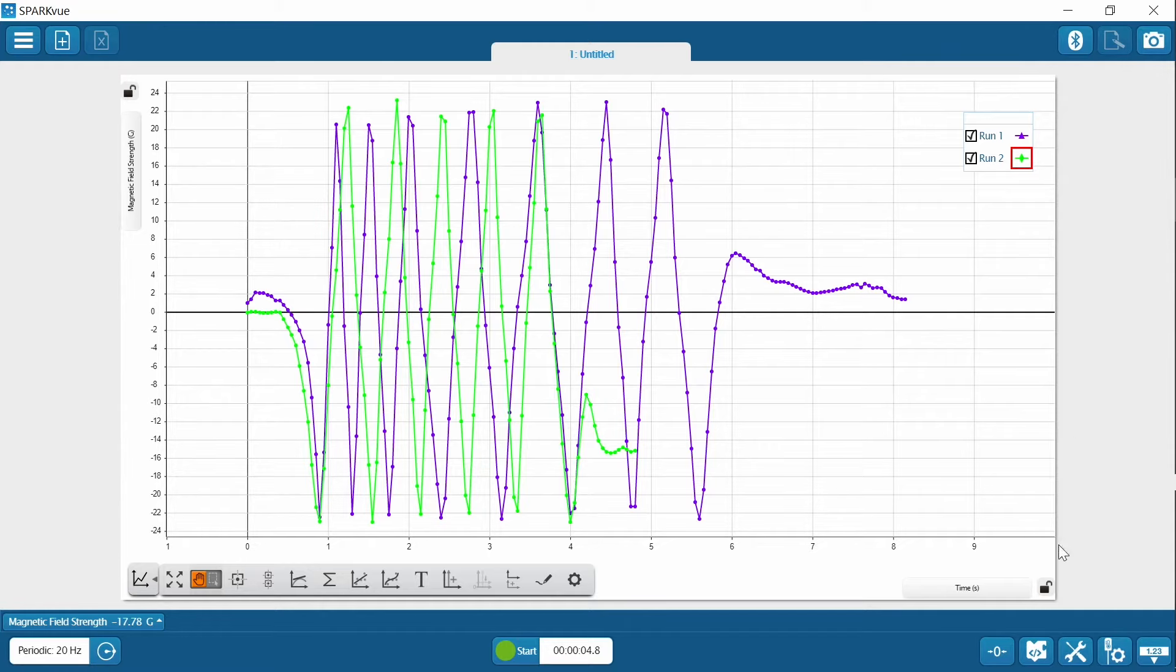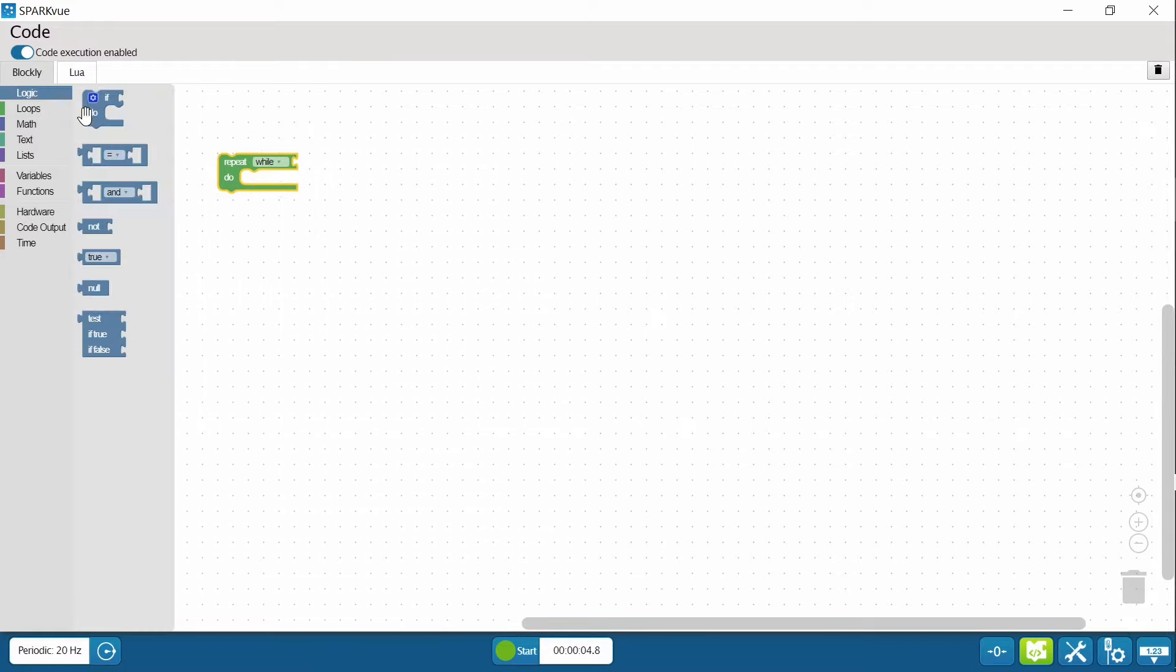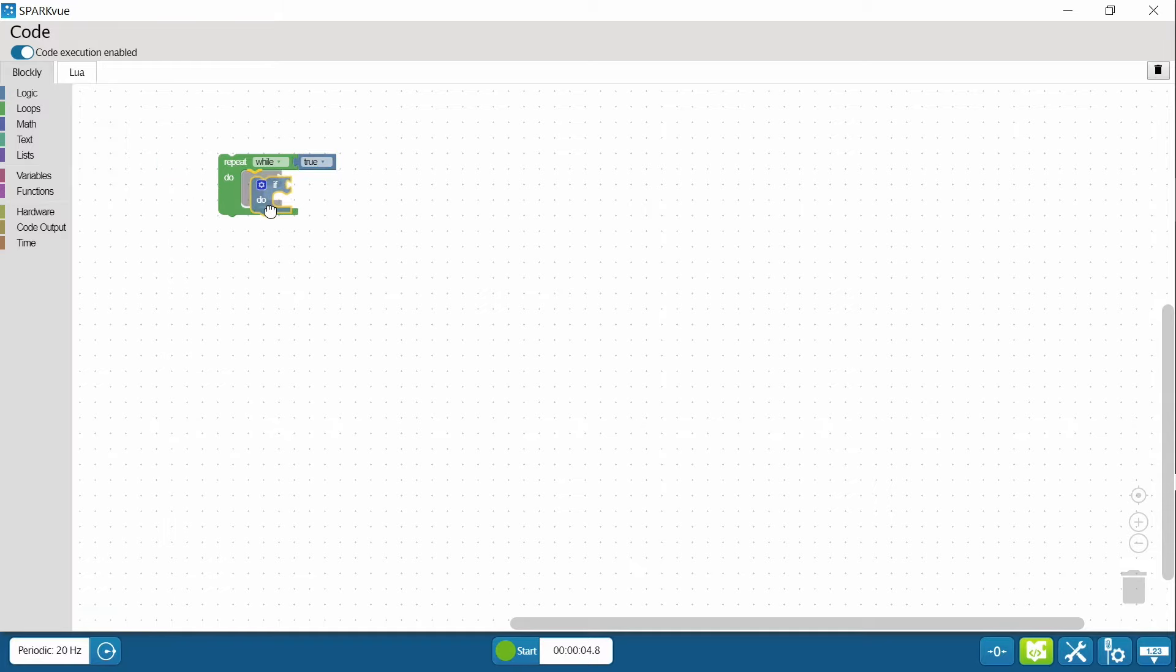Okay, everybody. Let's see how you did. I'm sure you came up with great programs, but I'm going to model one for you. You might have done something different, which is great about coding. So I am going to click on the code icon since I'm already connected to SparkView. And let's start with a Repeat While True loop.